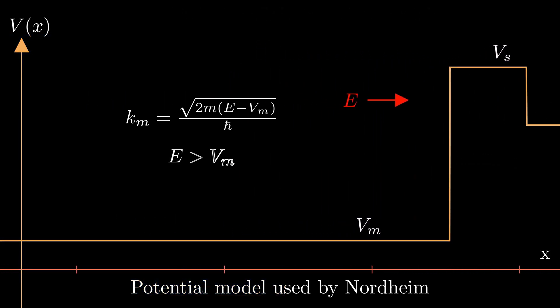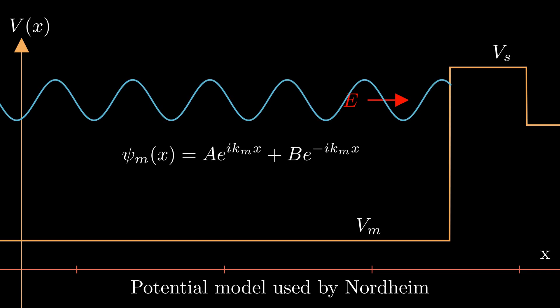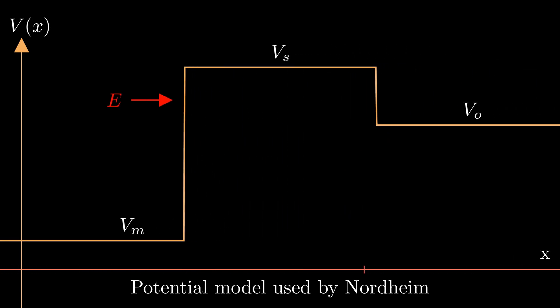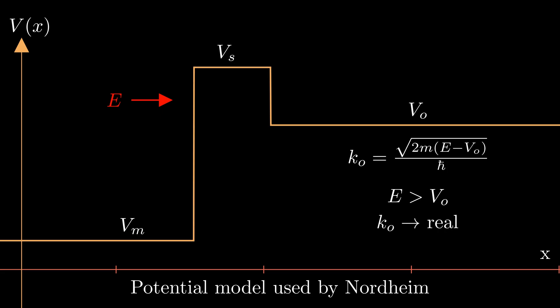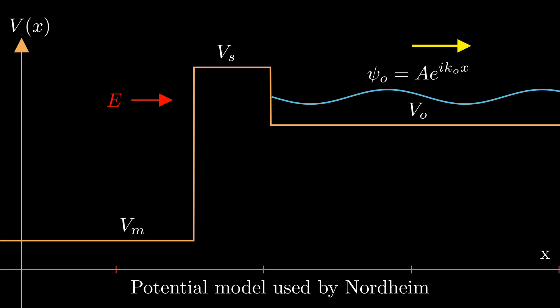Within the metal, electron energy is more than the potential energy and momentum is real. So the wave equation admits oscillatory or plane wave solutions, which have two components: one moving towards the barrier and the other away from it. The wave moving towards the barrier is the incident wave. The wave moving away from it is the reflected wave from the barrier. In the surface, as the energy is less than the potential, momentum is imaginary and the solution is a combination of exponentially growing and decaying parts. Again, looking at regions outside the metal, we realize that the electron energy allows for plane wave solutions like that inside, but only moving to the right as there is nothing there to reflect the wave.